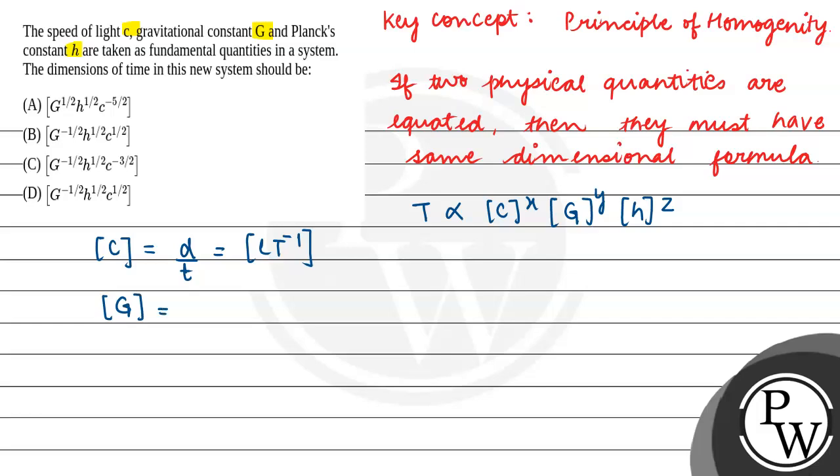Next is gravitational constant. The gravitational constant is F r squared upon m squared. That is M L T minus 2 into L squared upon M squared, which equals M minus 1, L to the power 3, T to the power minus 2.